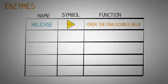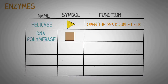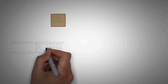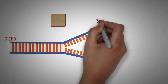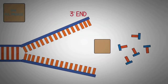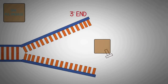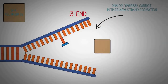The next enzyme is DNA polymerase, which performs the vital function of forming a new daughter strand of DNA. At the replication fork, DNA polymerase arranges new nucleotides into a DNA strand using the parent DNA as a template. However, DNA polymerase cannot synthesize a brand new strand from scratch — it requires a small sequence of RNA to initiate, which is provided by another enzyme.